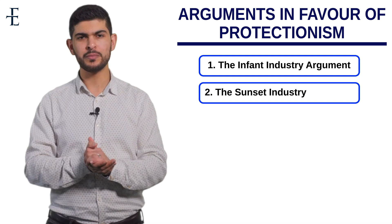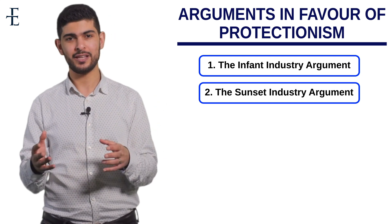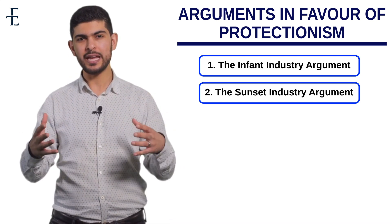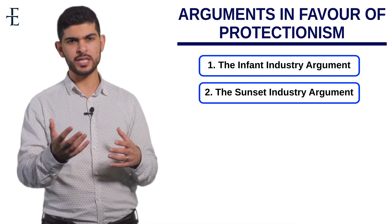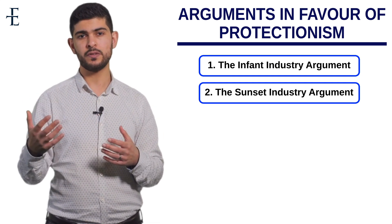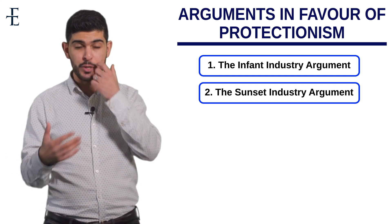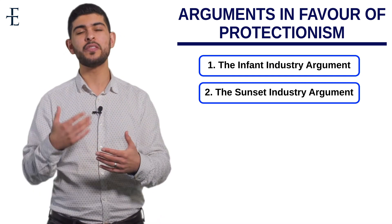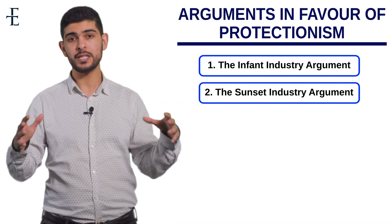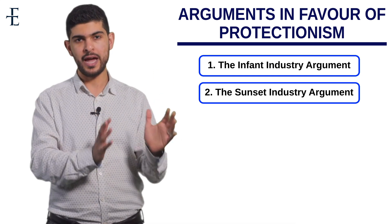Number two has different names — protecting geriatric, senile, or sunset industries, basically dying industries. A good example is the US steel industry, which is heavily protected because it has fallen behind in terms of costs to countries such as China. But the government knows that if they had free trade, this is a major source of employment, so there would be mass unemployment. The argument is to protect declining or outdated industries so you give them the time required to restructure and become competitive on an international basis — because without protectionism, the Chinese would completely dominate the US manufacturing sector.